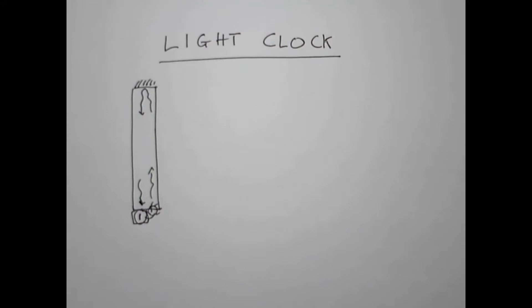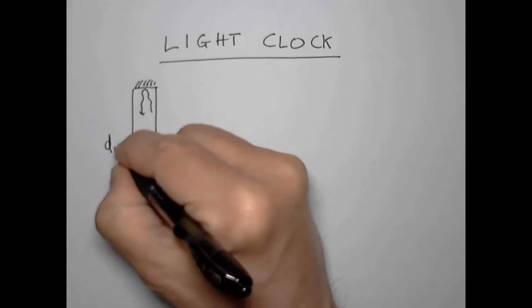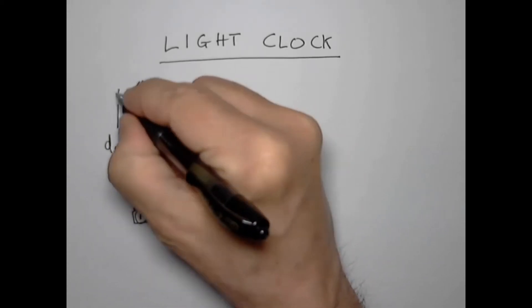Let's consider this light clock to be at rest. It has a length d0 when at rest.